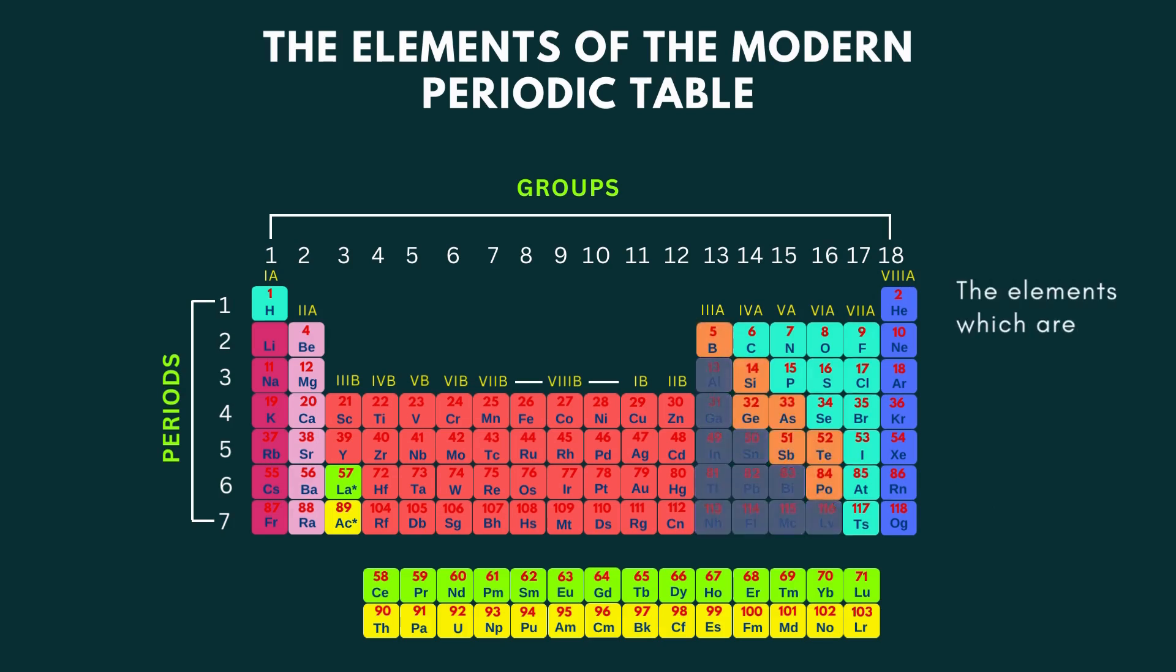Those elements marked under purple color on the periodic table are also metals and often named as other metals. The elements of group 17 or 7A are called halogens.